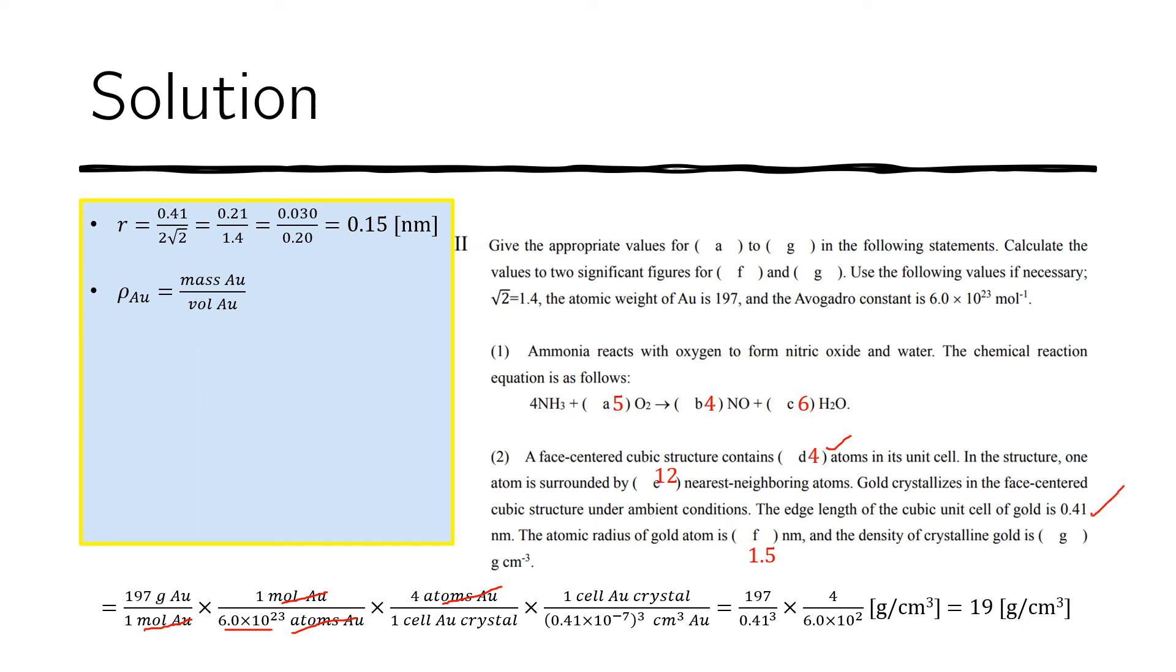Therefore, the volume of that is actually 0.41 times 10 to the minus 7. So the times 10 to the minus 7 is to convert this from nanometers to centimeters. And if we put that there, we have a centimeter cubed on the denominator.